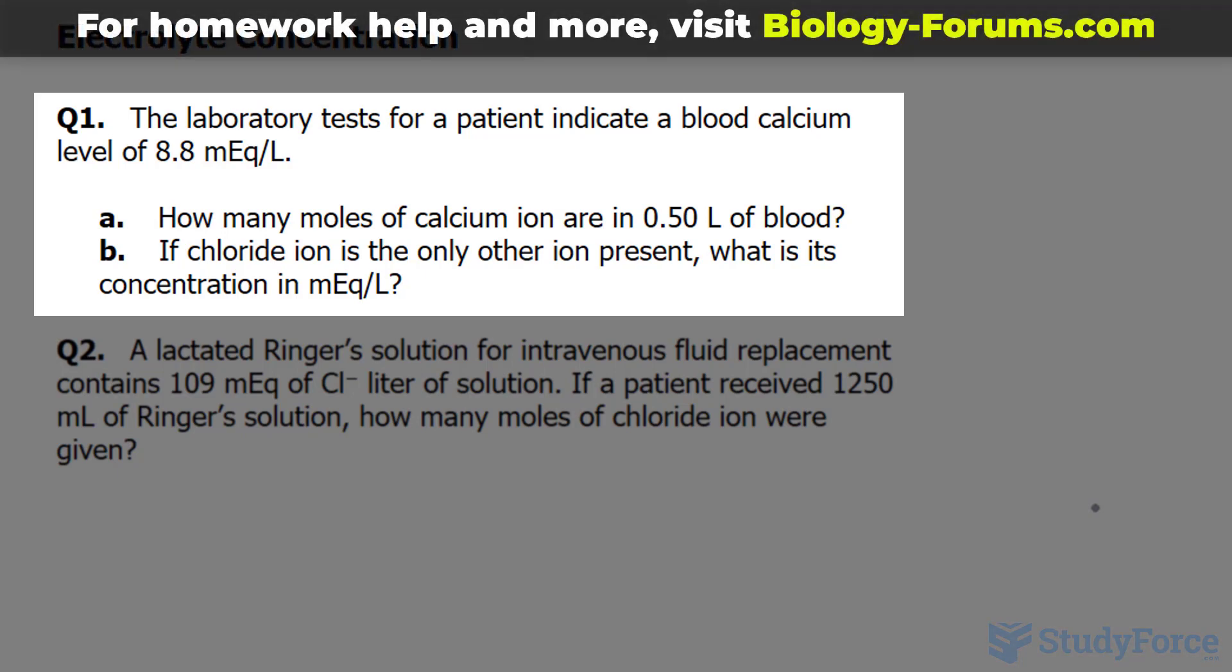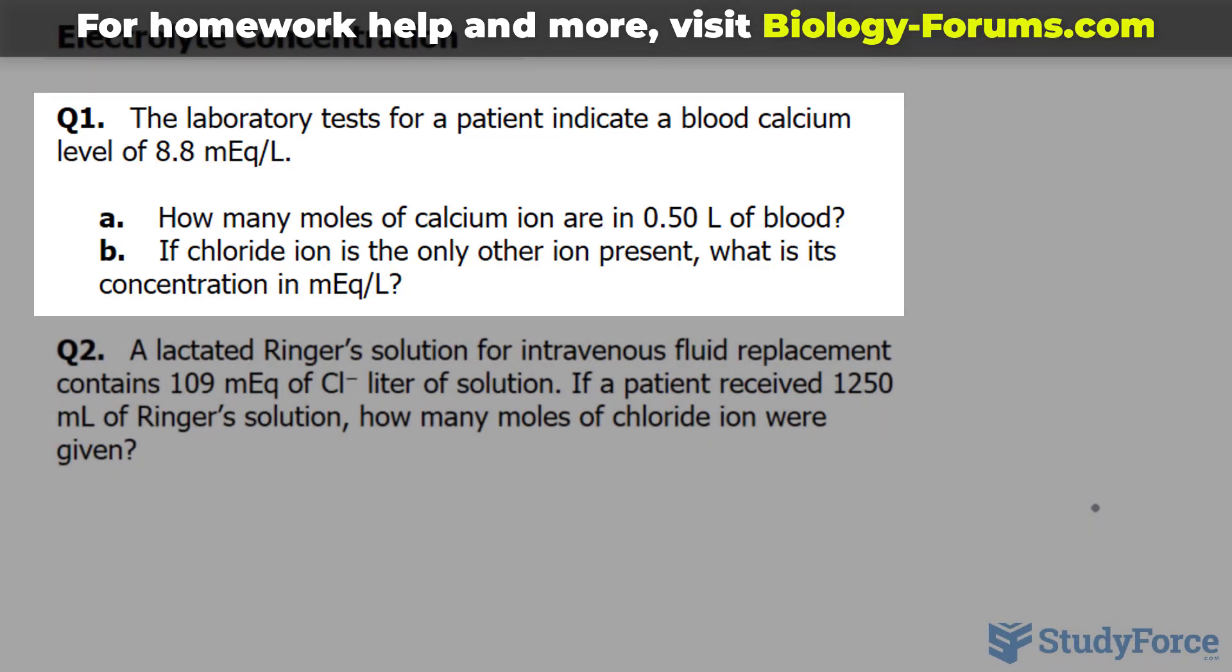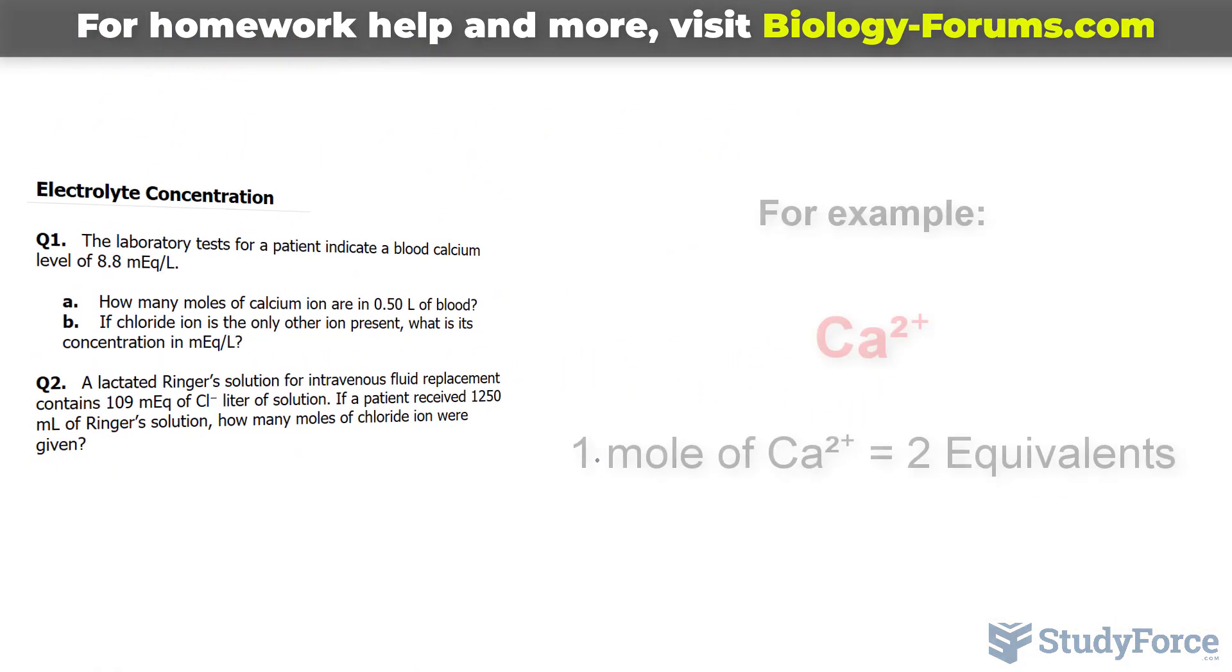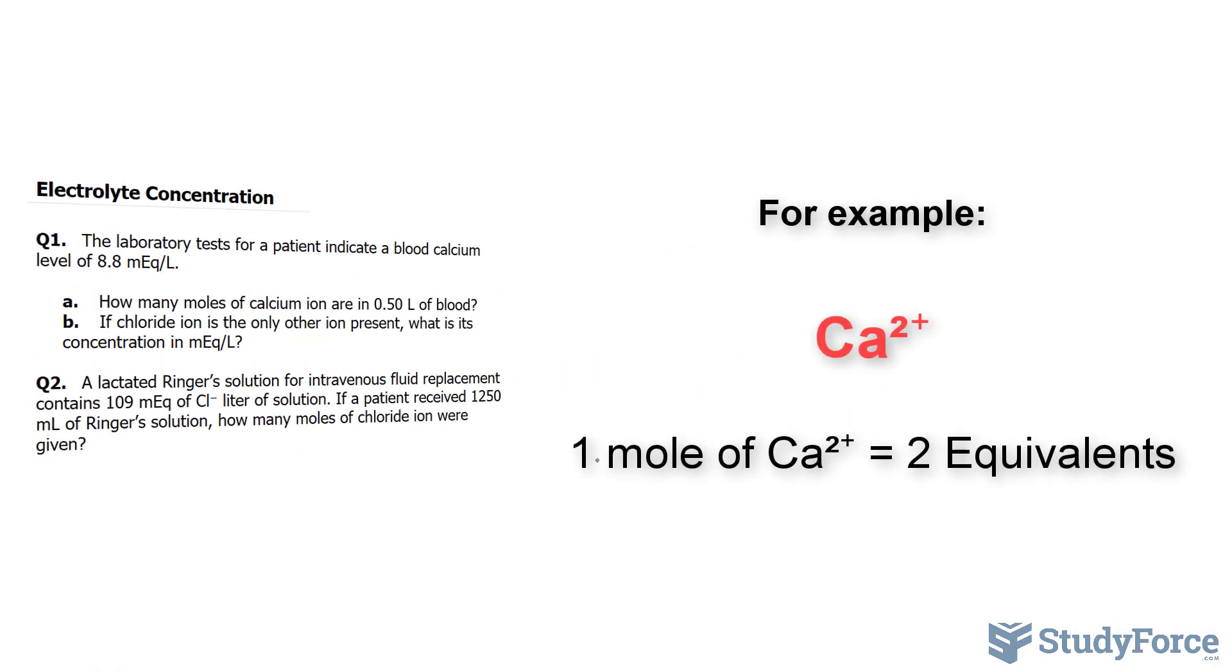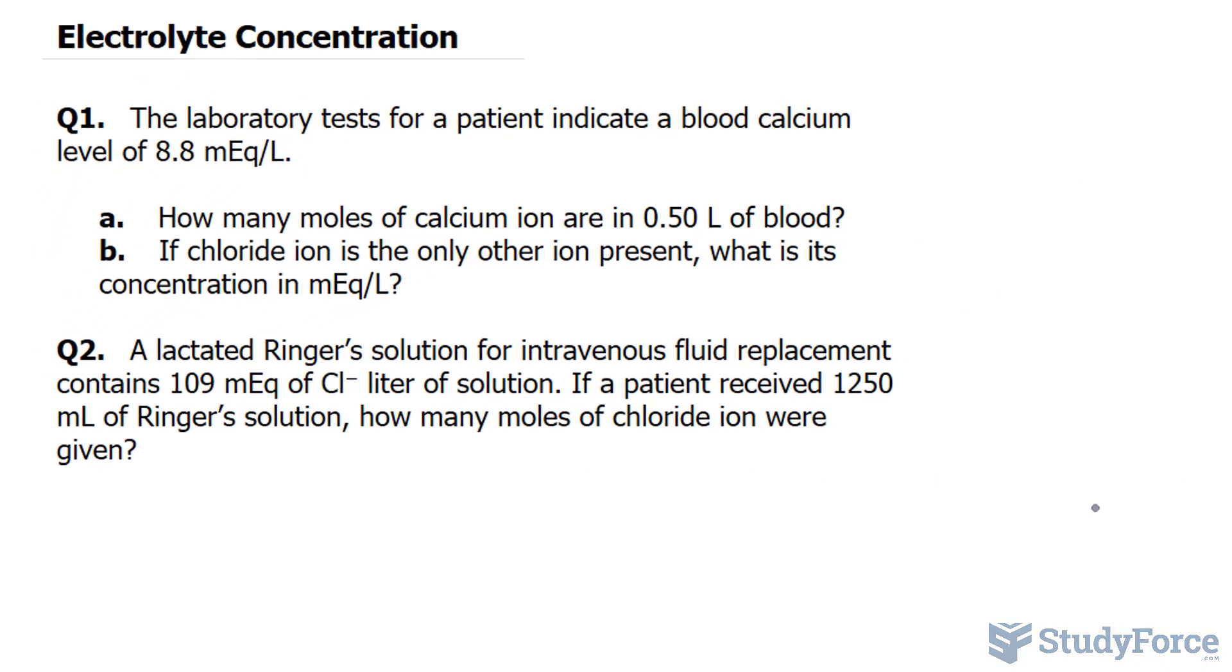How many moles of calcium ion are in 0.50 liters of blood? Now before we begin, by definition, in chemistry, an equivalent is the number of moles of an ion in a solution multiplied by the valence of that ion. That will come in handy later on, but first,